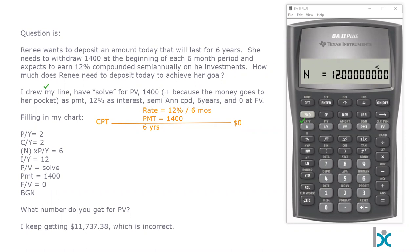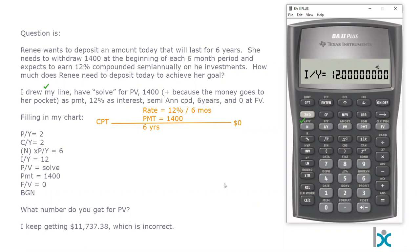Now we plug in our rate. Our rate is 12. I don't have to do any adjustment to the rate — with the SHARP calculator it works very well. If you're using the HP, you're probably already lost because the HP has no PY function the same way the SHARP does, and I'm really not a fan of the HP for that reason. Present value we'll solve for later. Payment is $1,400 — positive, as the student rightly indicated, money coming to Renée. Future value is zero.